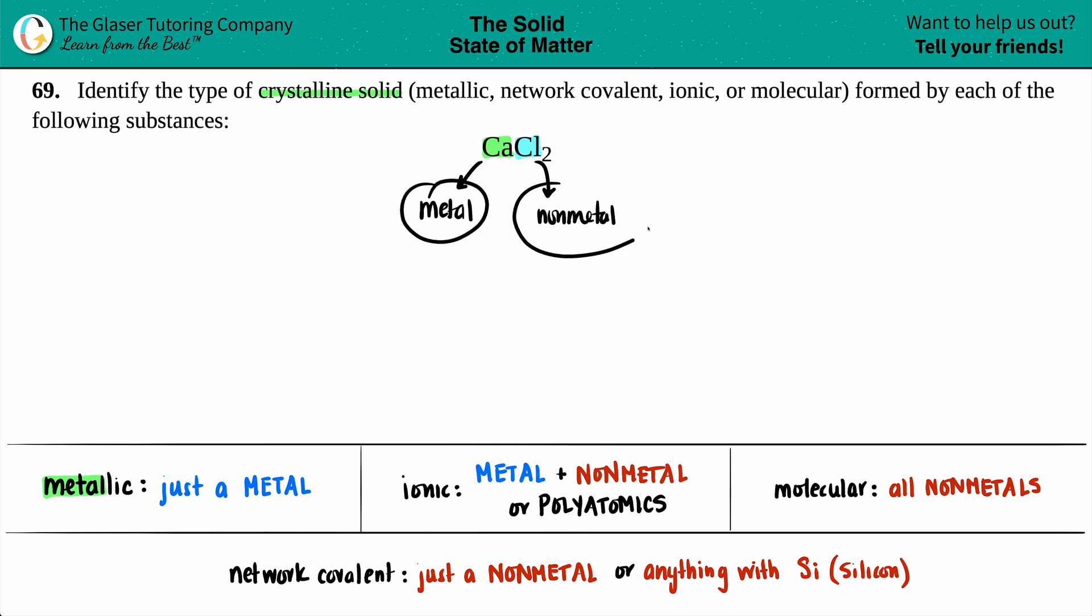Since we have both a metal and a non-metal, it's not going to be a metallic crystalline solid, because we need to just see a single metal, such as copper by itself or iron by itself.